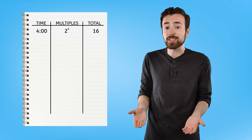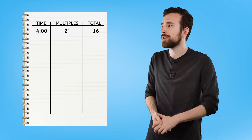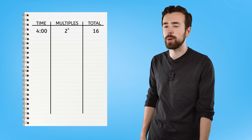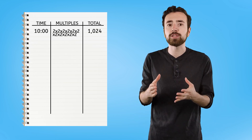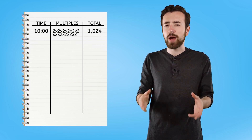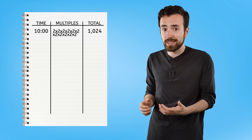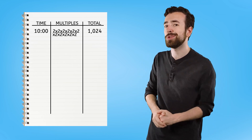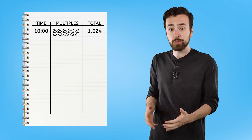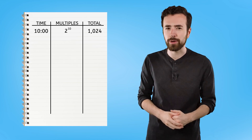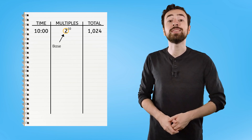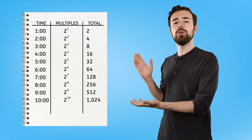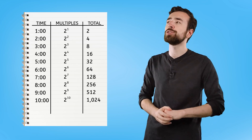Now we can replace the multiples column with our exponential representation — that looks much better. Let's see how we can use this on the last row in our chart. So by 10 o'clock, we had to write out a lot of twos. We can write two multiplied by itself ten times as two to the tenth power. The base is two and the exponent is ten. Here is our new, fully updated chart using exponential notation.